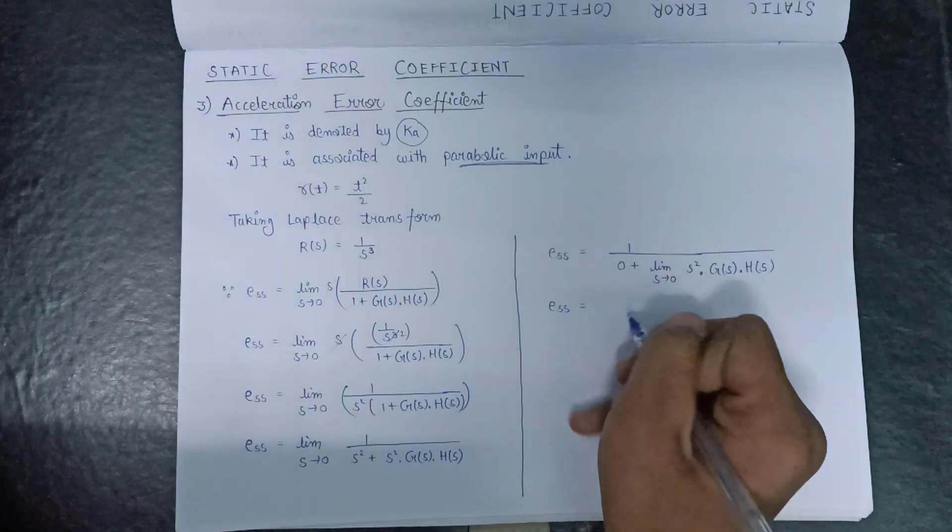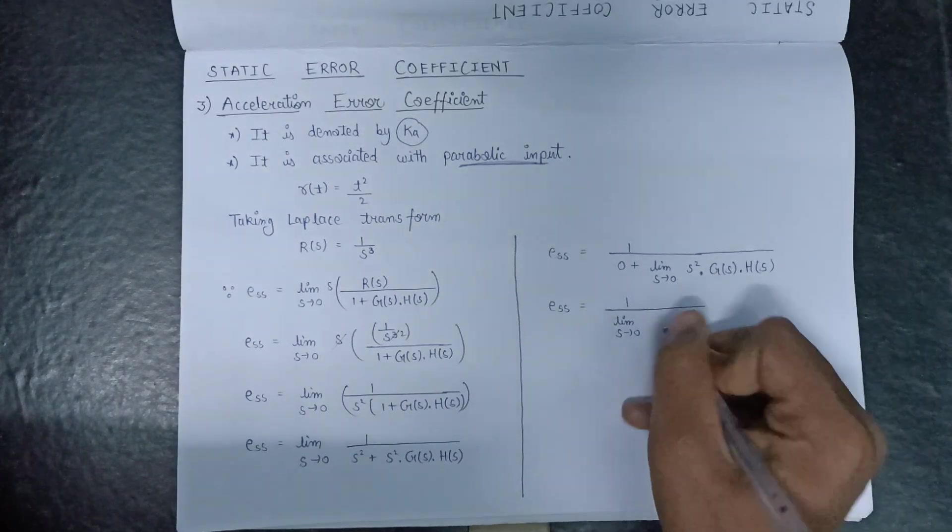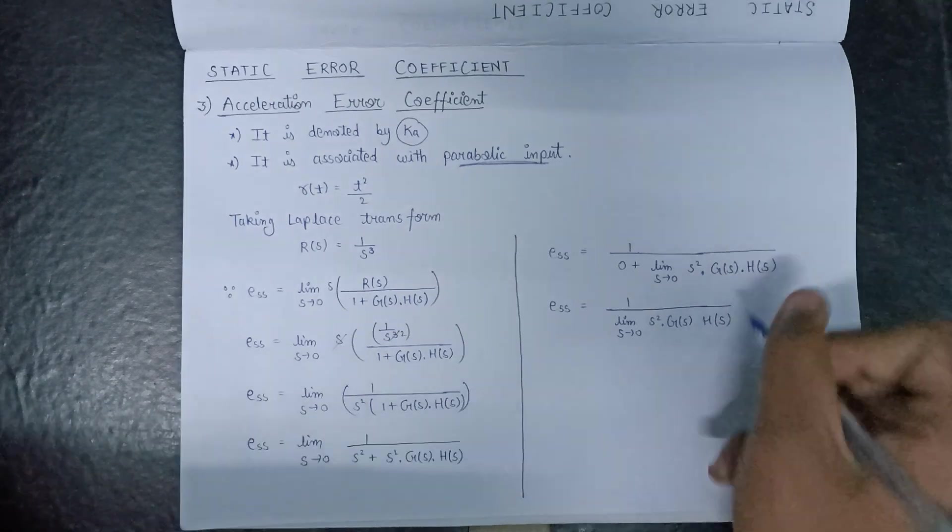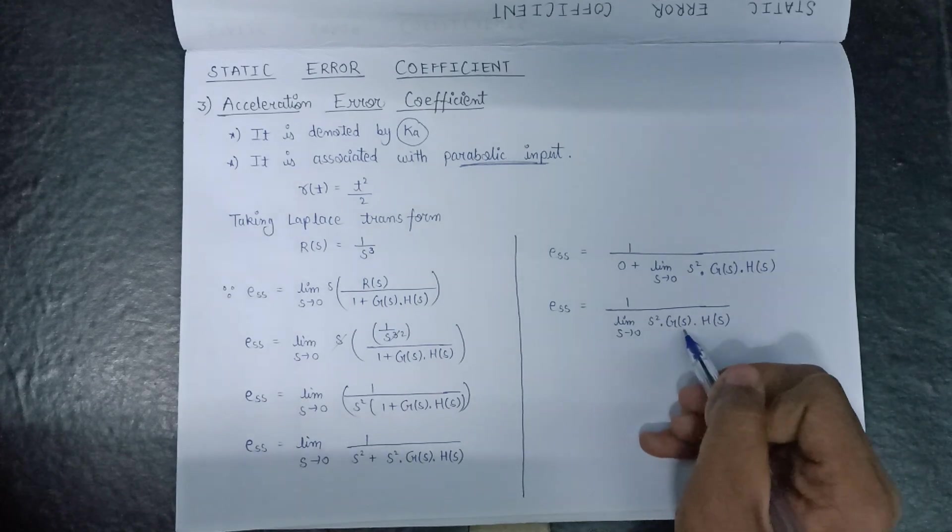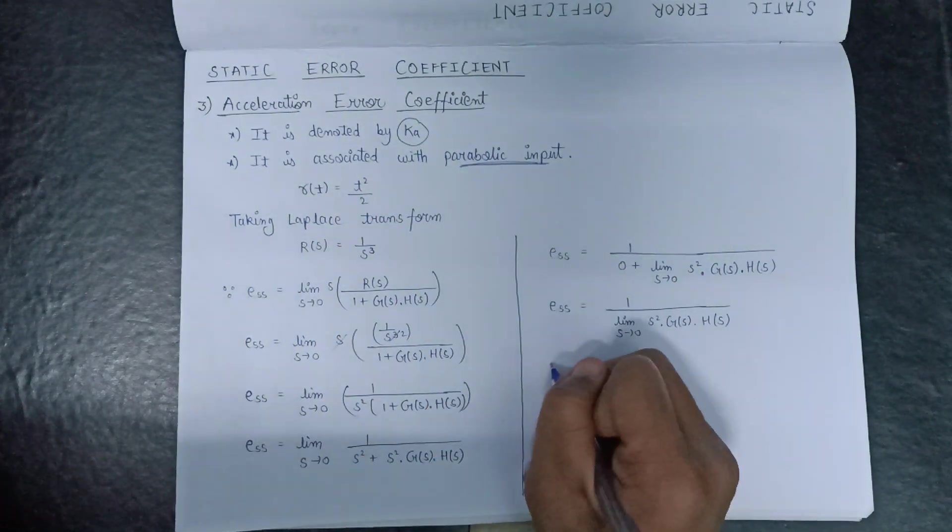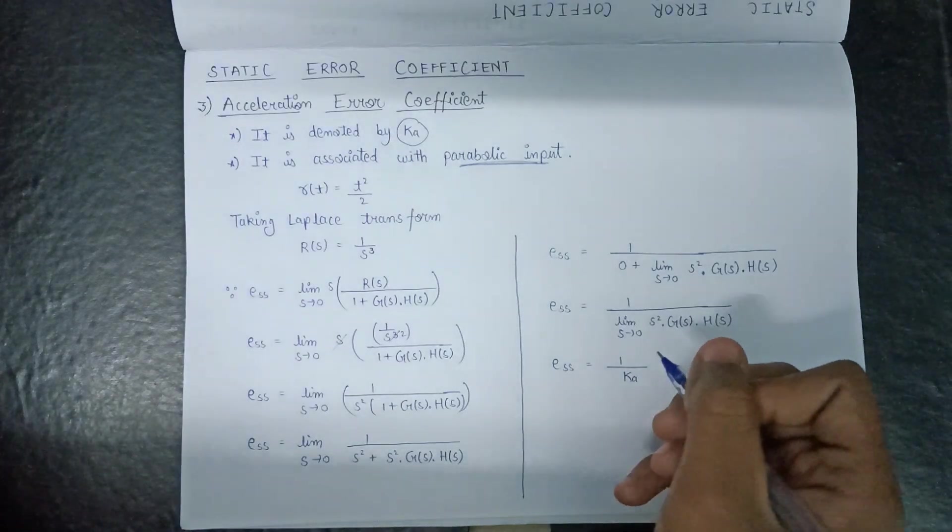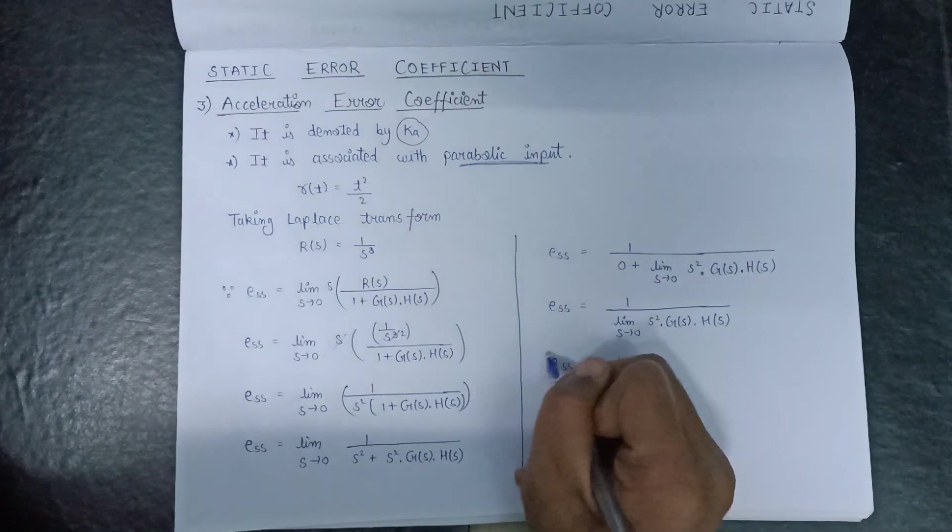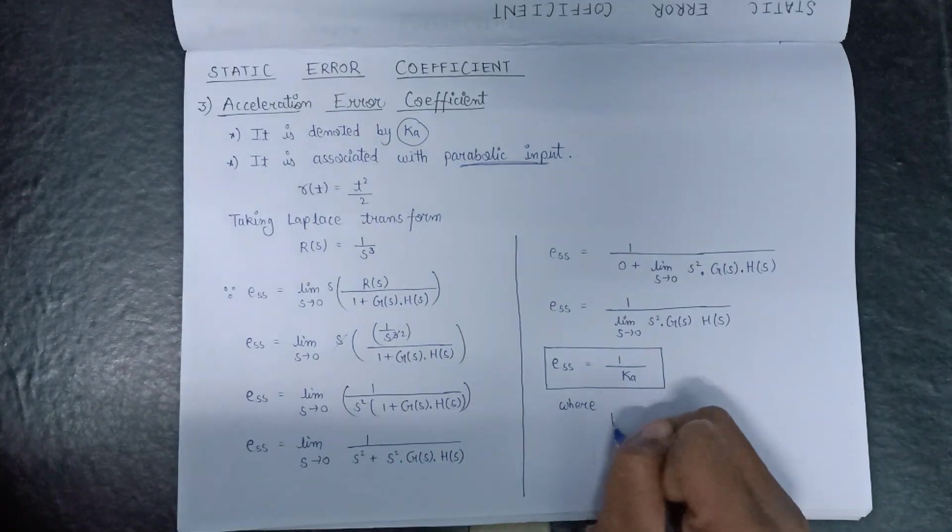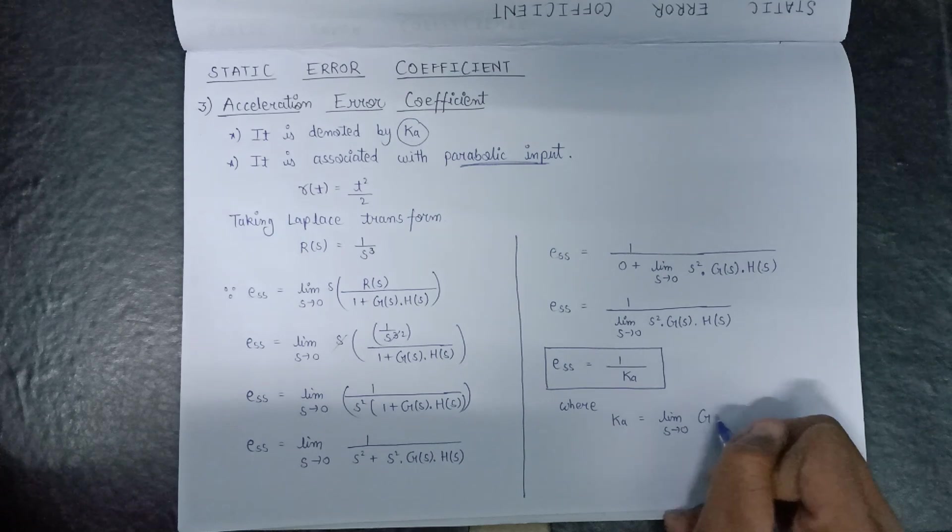So E(s) can also be rewritten as 1 over limit s tends to 0, s²·G(s)·H(s). Here limit s tends to 0, s²·G(s)·H(s) is nothing but acceleration error coefficient that is denoted by Ka. So in terms of Ka, E(s) can be written as 1/Ka, where this Ka will be equals to limit s tends to 0, s²·G(s)·H(s).